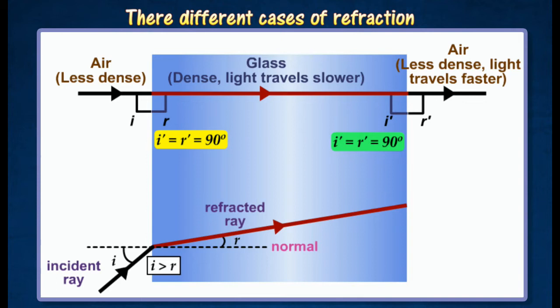Case 2 occurs when the ray of light passes from air, which is less dense, to glass, which is more dense. The ray will bend towards the normal and the speed of light decreases after entering the glass.